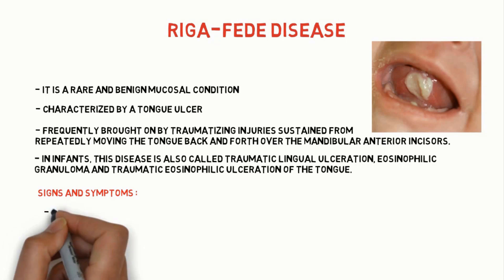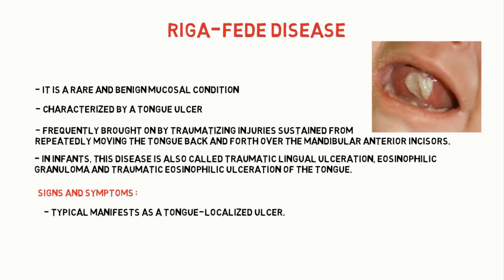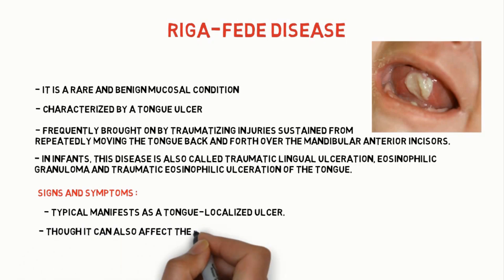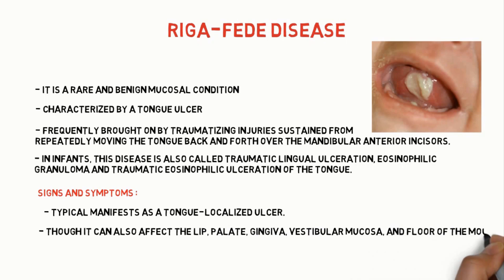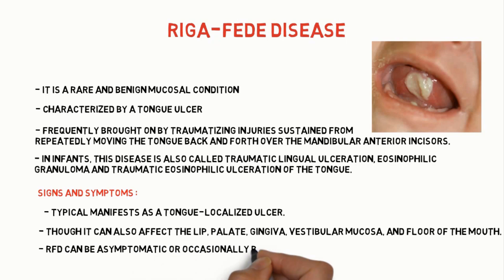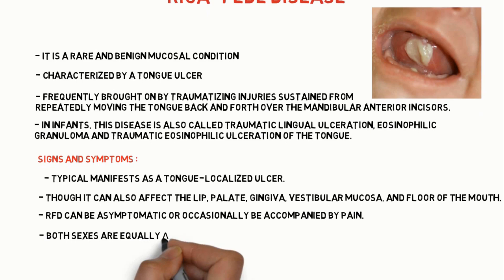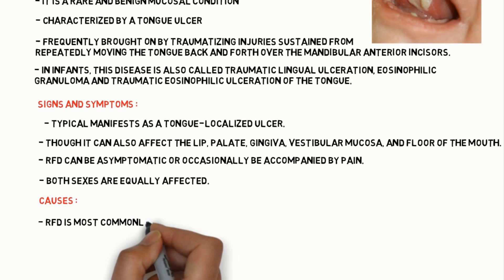Coming to the signs and symptoms: the typical manifestation is a tongue-localized ulcer, though it can also affect the lip, palate, gingiva, vestibular mucosa, and floor of the mouth. Riga-Fede disease can be asymptomatic or occasionally accompanied by pain. Both male and female are equally affected.